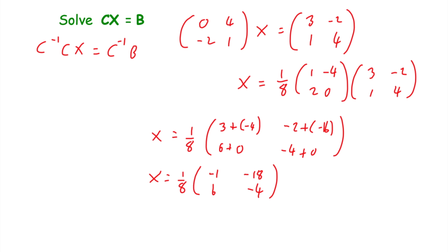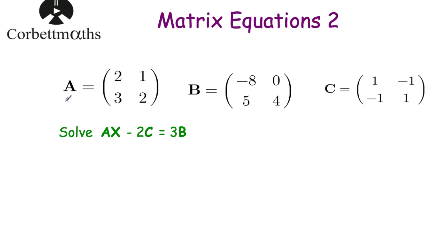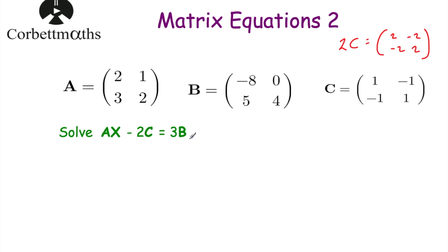Let's have a look at our next example. This time we've got matrix A equals 2, 1, 3, 2; matrix B equals negative 8, 0, 5, 4; and matrix C equals 1, negative 1, negative 1, 2. We've been asked to solve the equation AX minus 2C equals 3B. First I'll work out 2C and 3B. 2C equals 2, negative 2, negative 2, 2. And 3B equals negative 24, 0, 15, 12.